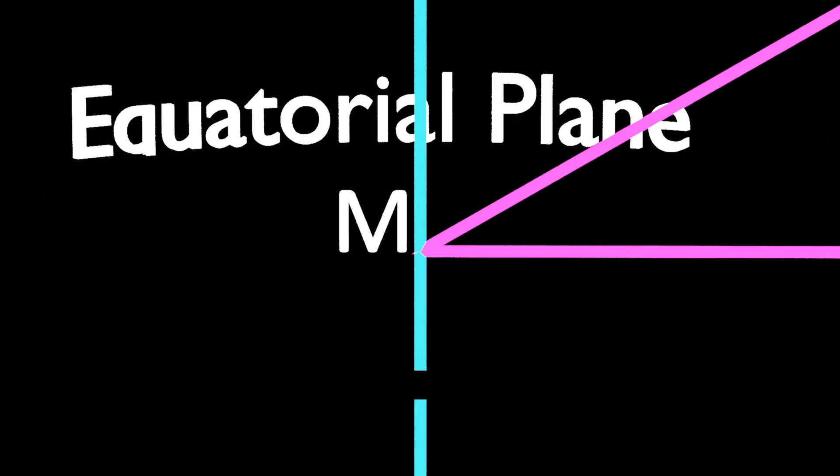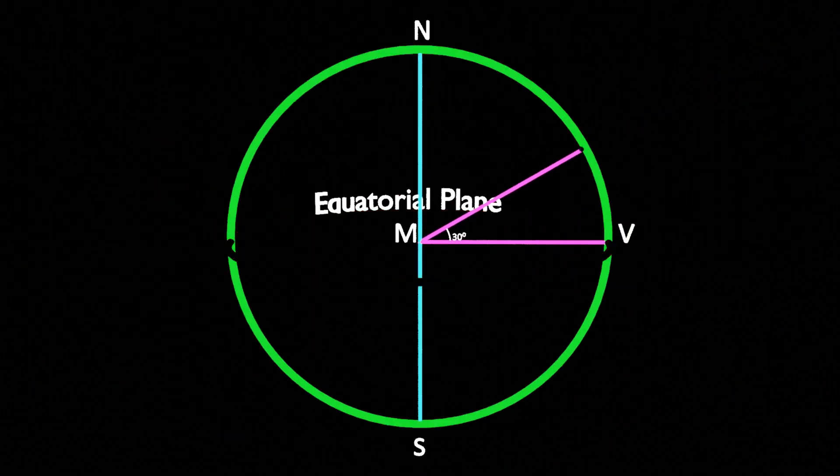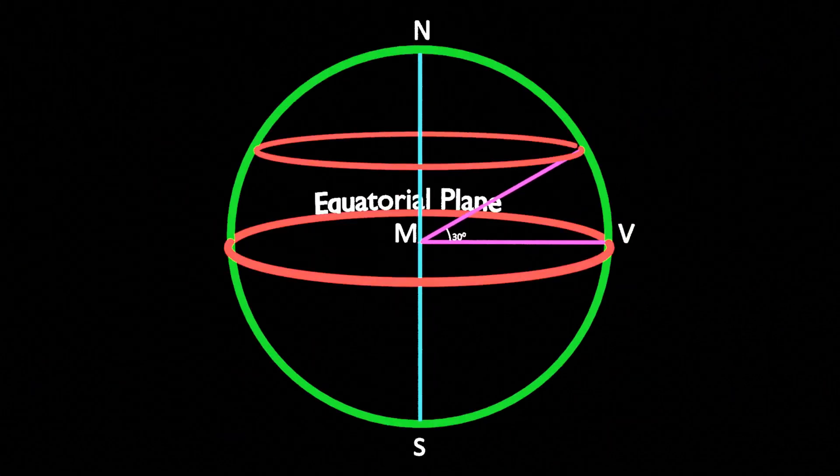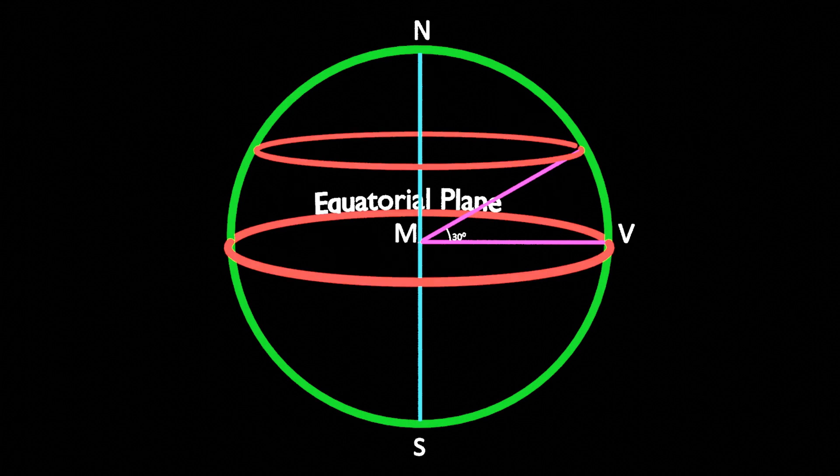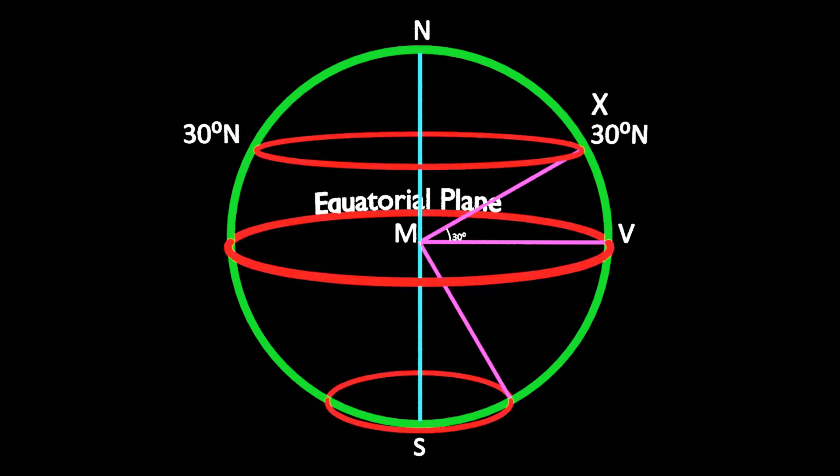For example, in this figure, the measure of angle XMB is 30 degrees. That is, its angular distance from the equator is 30 degrees. Look at the figure and tell the angular distance of Y from the equator.